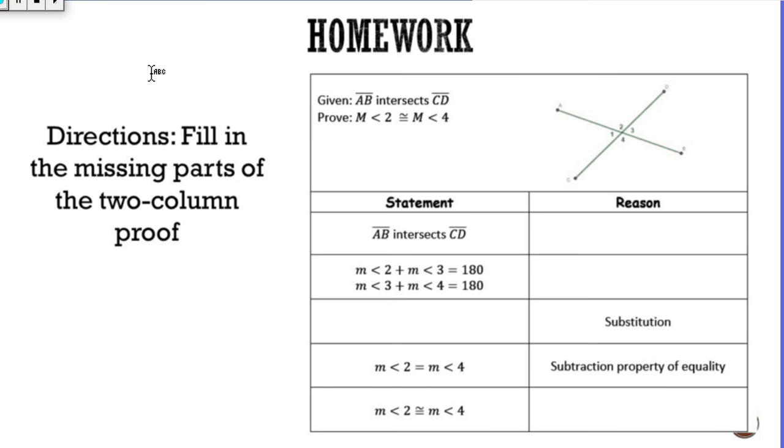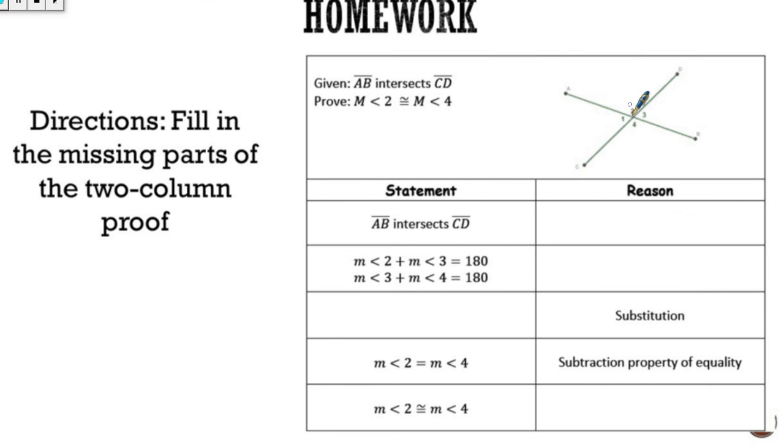It tells us that line AB intersects line CD and it wants you to prove that angle 2 is congruent to angle 4. So it wants me to prove that this angle and this angle are vertical angles. It already did some things for me. It says this intersects, so I just need to fill in the blank. This is given, so that's what goes here because that's what they gave us.